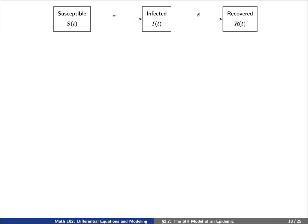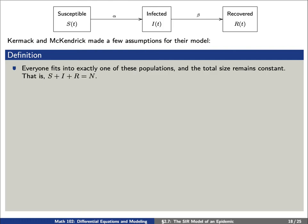Kermack and McKendrick made a few assumptions for their model. First, they assume that everyone fits nicely into exactly one of these three populations and the total population size remains constant. That is, S + I + R equals some constant number N.